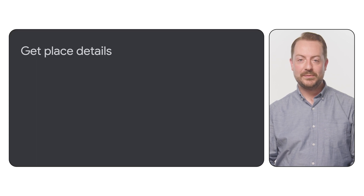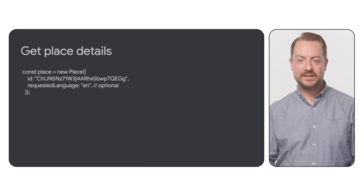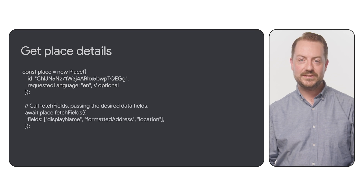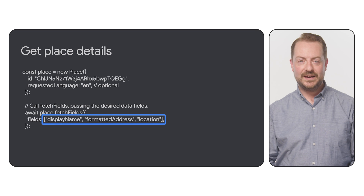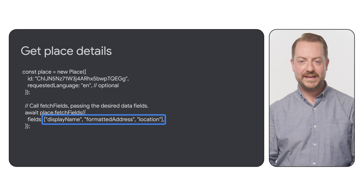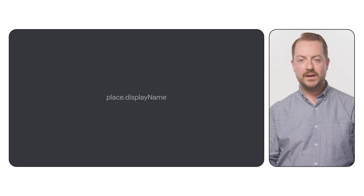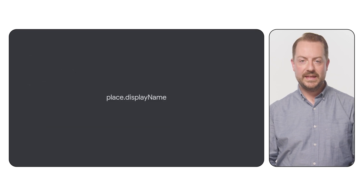To get details of a place, create a new place object using a place ID in the constructor, then call FetchFields, passing through the required fields to return. This can be used to retrieve details such as a place location and its attached photos and reviews. In this example, we are requesting the name, location, and address of a place using the place ID as a constructor when creating the place object. The place object created can then be queried for the data returned by the API.